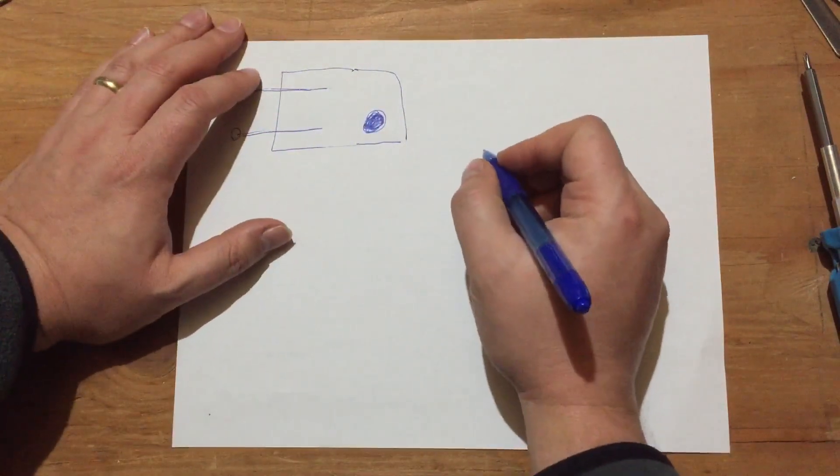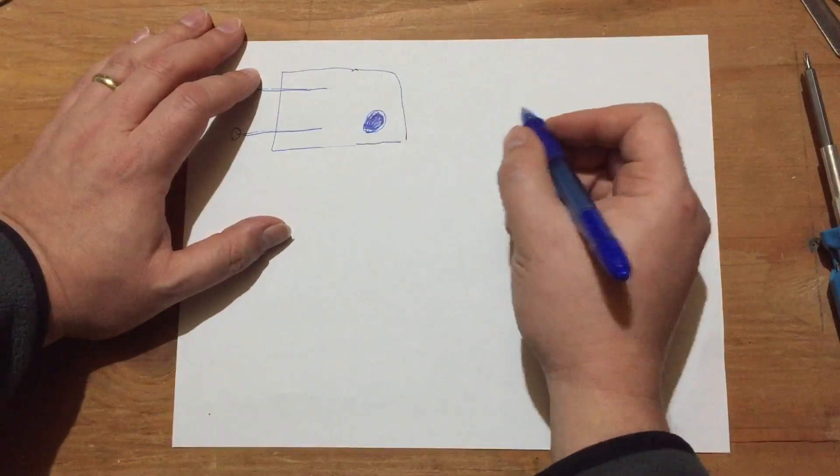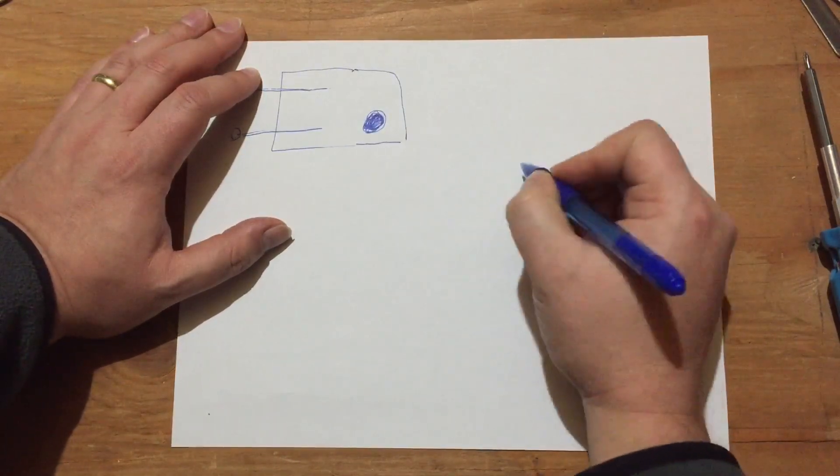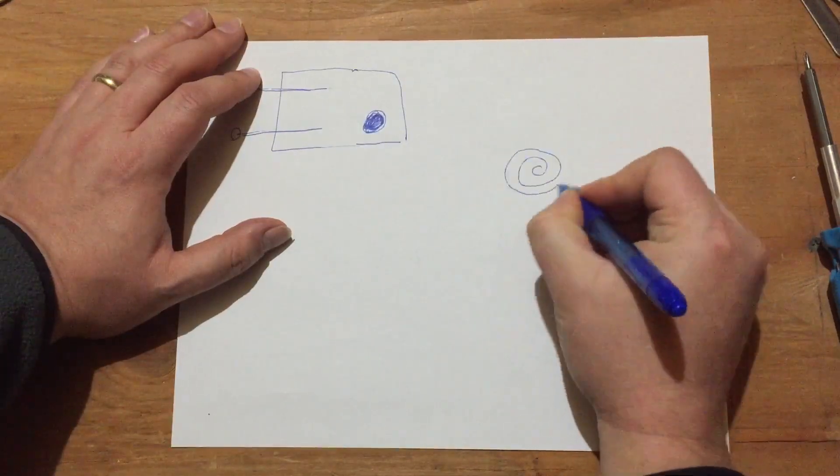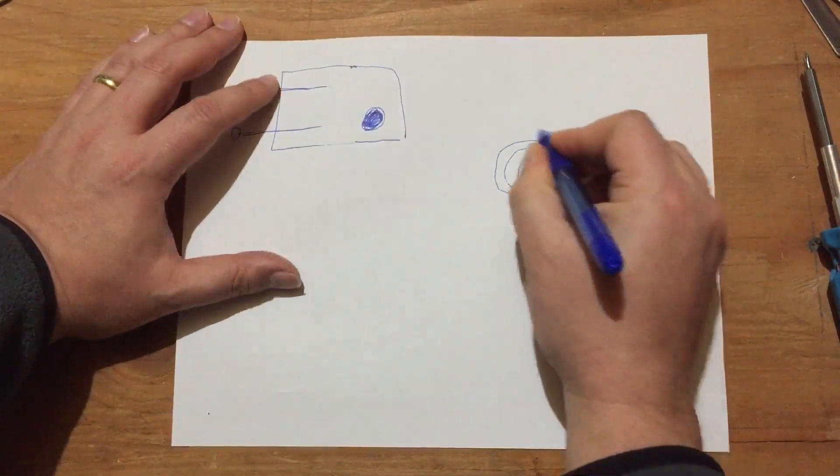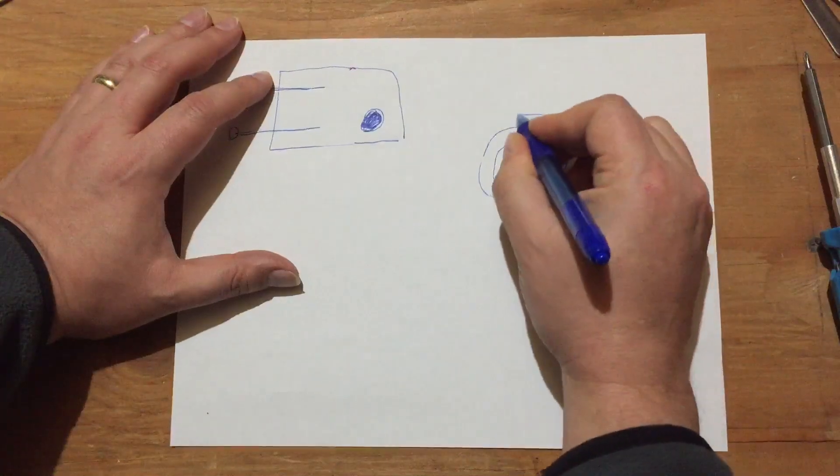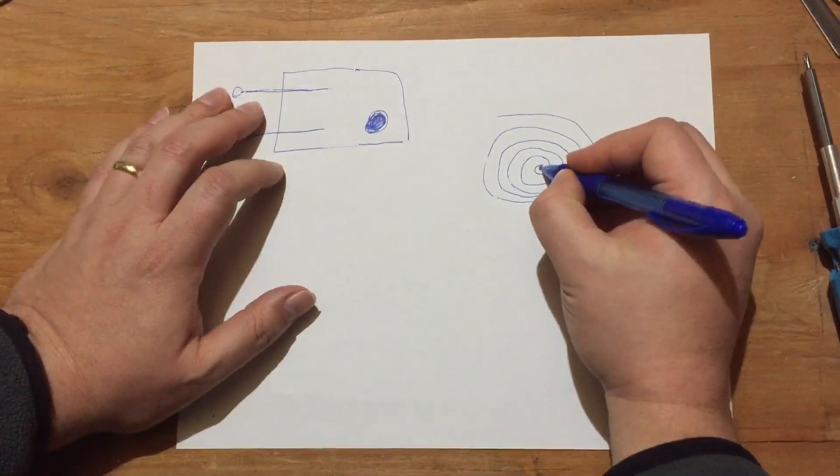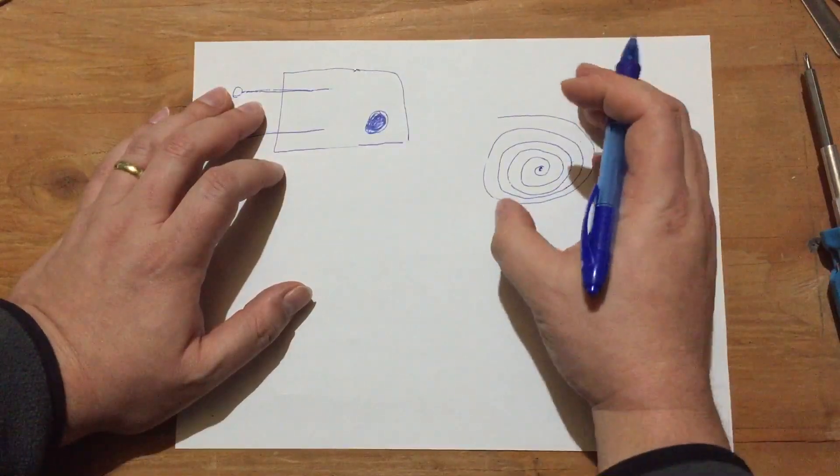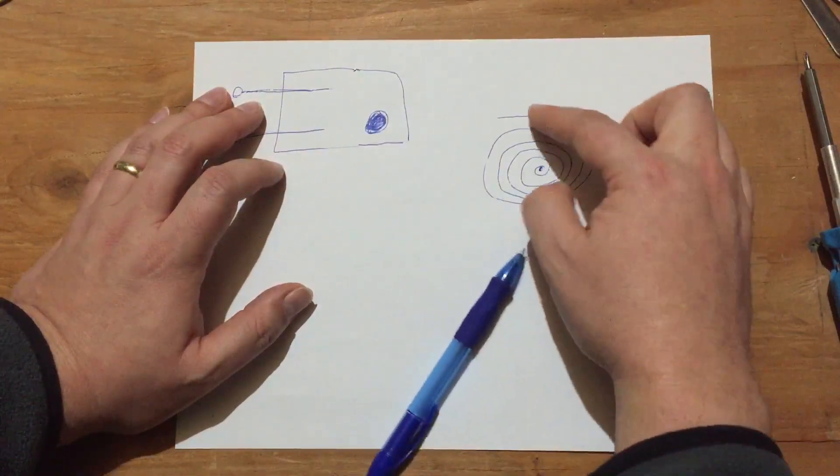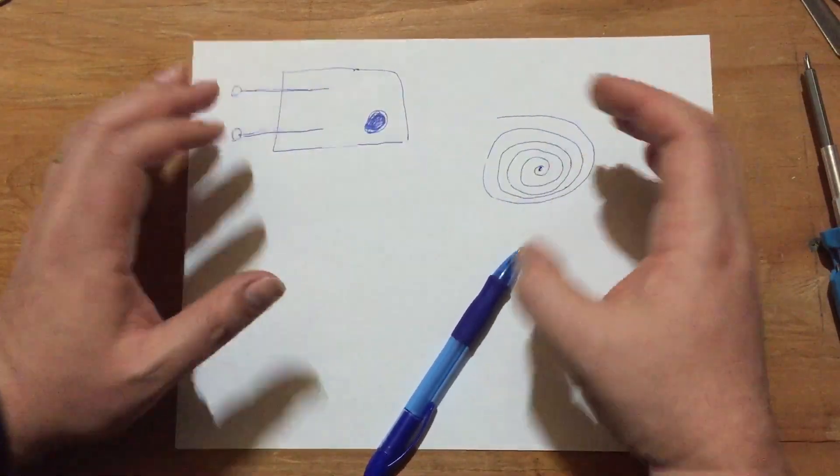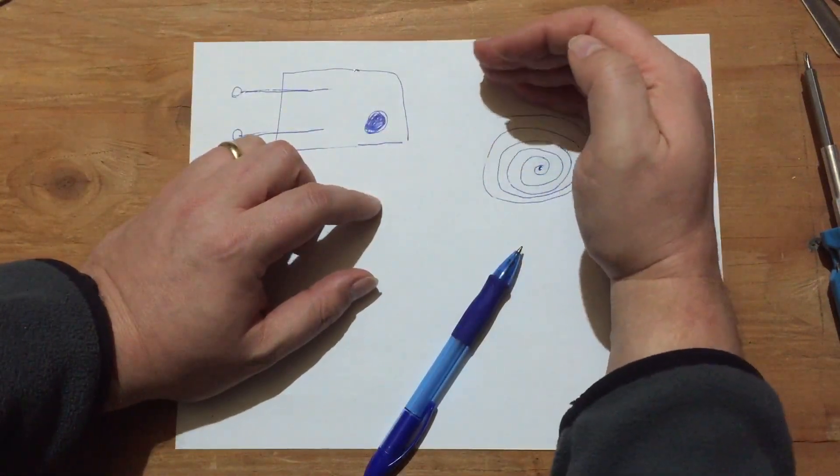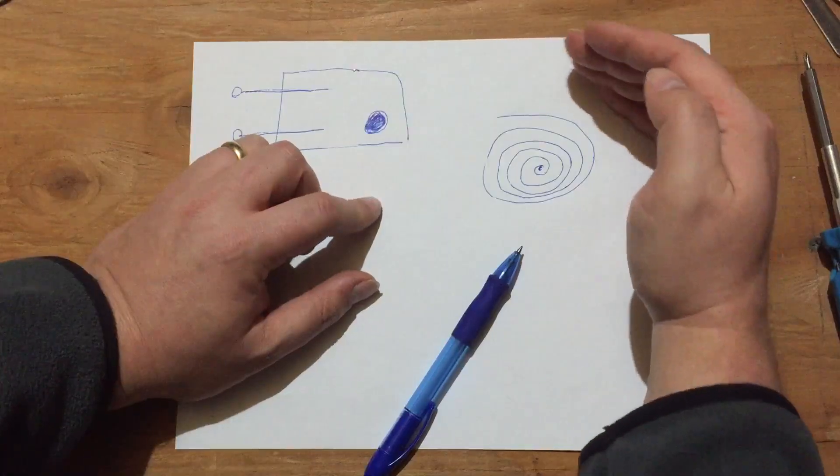What they do instead is they wind this very, very long strip in a spiral like this. And this end is fixed. And as it heats up, this part wants, the outside of this spiral wants to get longer, so it kind of unwinds. And this end here, the very far end of it, will tilt away like this. And as it cools down, it will tilt back like this.